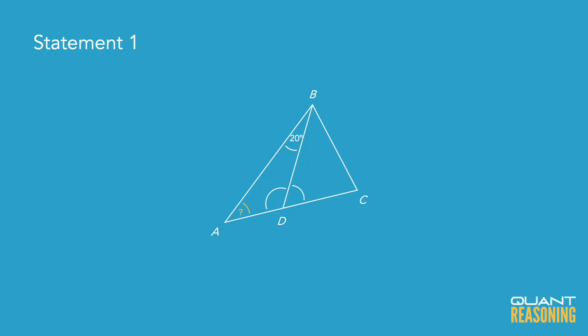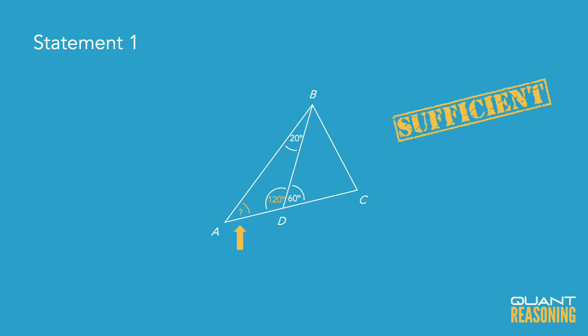So since statement one does give us this 60 degree angle, we can infer that the angle next to it is 120, and we know that the sum of the angles in a triangle is 180. So that leaves just 40 degrees for the angle we're looking for.